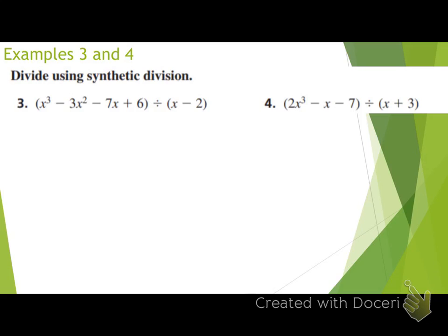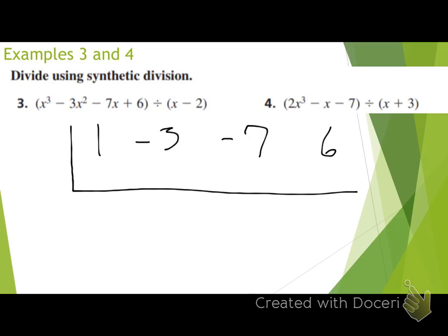Divide using synthetic division: x cubed minus 3x squared minus 7x plus 6 divided by x minus 2. Go ahead and try this one on your own, and then we'll go over it. Is this what everyone's getting for their coefficients for the dividend? 1, negative 3, negative 7, 6.